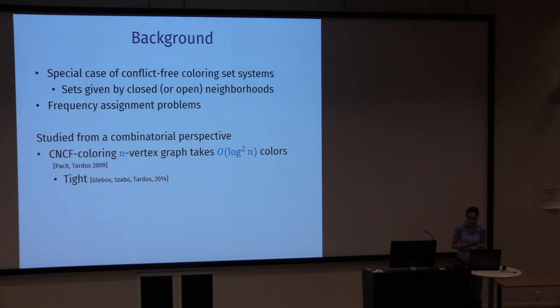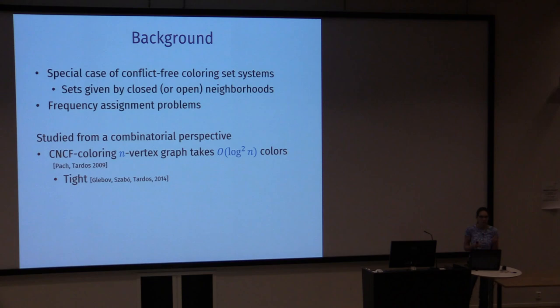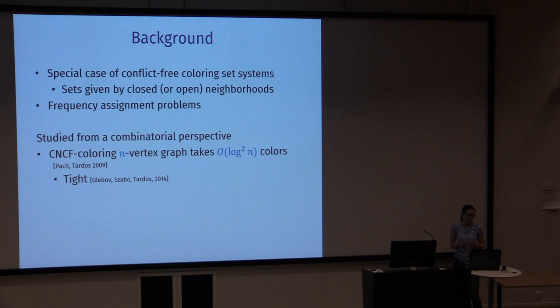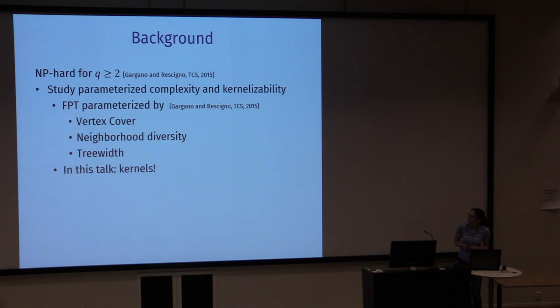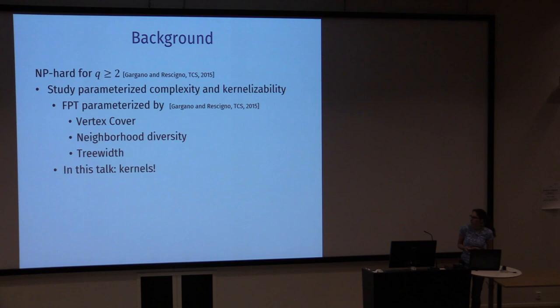The CNCF colouring problem has been well studied from a combinatorial perspective. We know that any n-vertex graph can always be CNCF coloured with order log-squared n colours, and there are graphs for which you actually need this many colours, so this bound is tight. From an algorithmic perspective, the problem is NP-hard as soon as you have at least two colours and trivially solvable with one. So it makes sense to study parameterised complexity — the problem is FPT when parameterised by vertex cover, neighbourhood diversity, or treewidth.